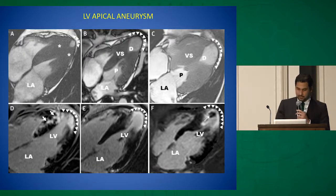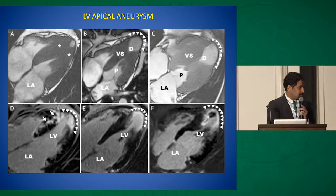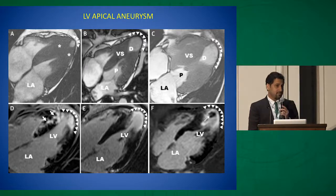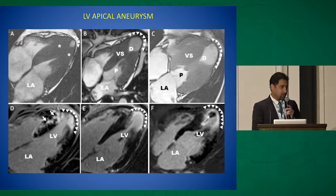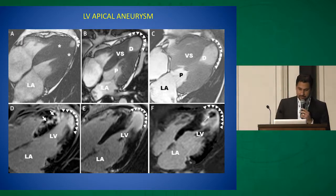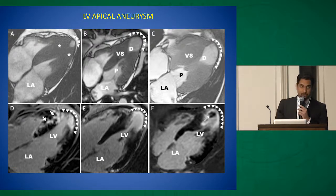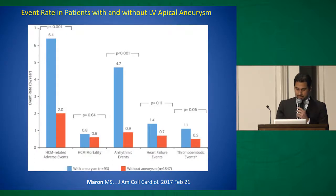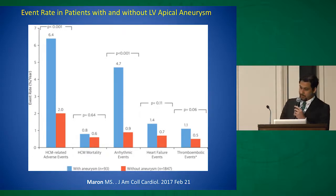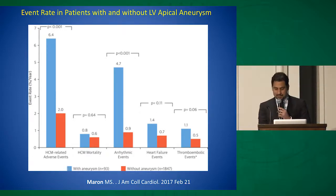Left ventricular apical aneurysm is most commonly associated with mid-cavity obstruction. It may occur in various shapes and sizes — from very small aneurysms easily missed on echocardiography to large aneurysms with clots in them. The event rate in this subgroup is very high — three-fold higher events if you have an aneurysm versus if you don't. Most of these events are arrhythmic, with some being thromboembolic in patients who have a clot in the aneurysm. Survival is poor, with up to 10% event rate per year in patients with LV aneurysm.